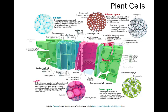Xylem is made up of vessel elements and tracheids which are hollow because they are dead at maturity. They function much like straws that conduct water and minerals from the roots up into the shoots.